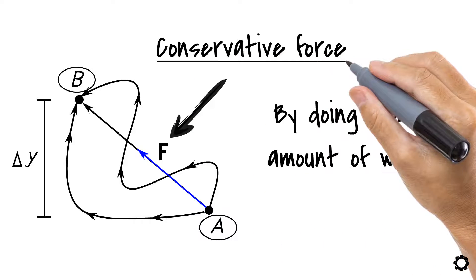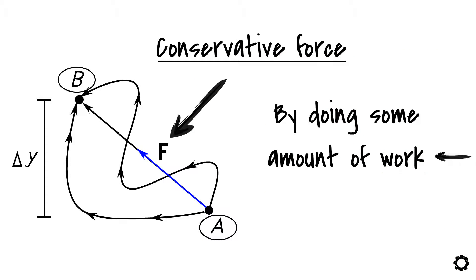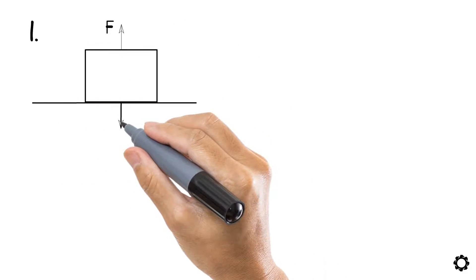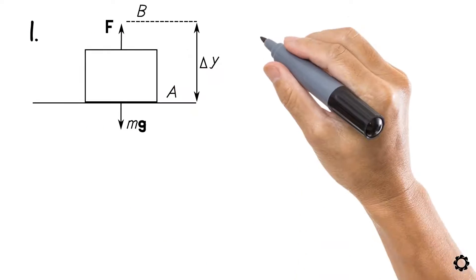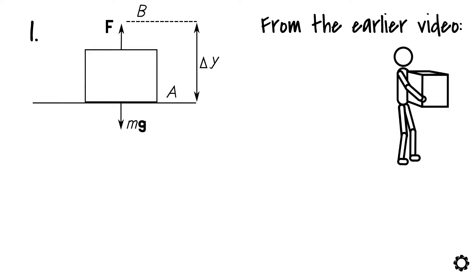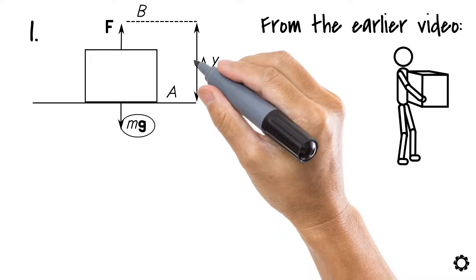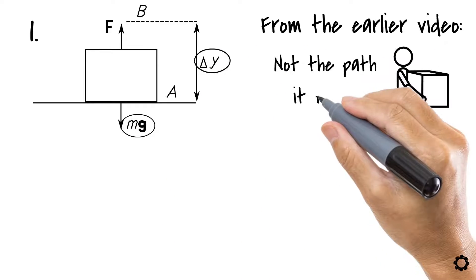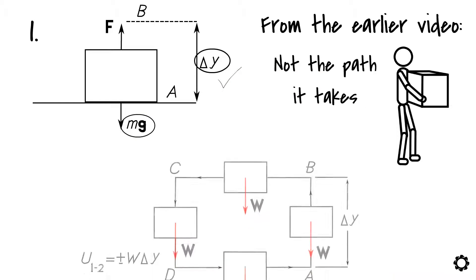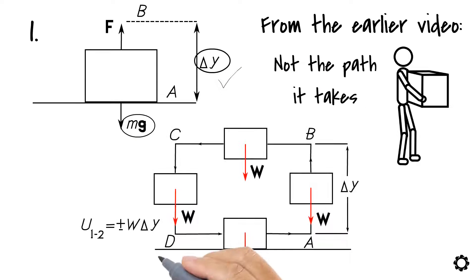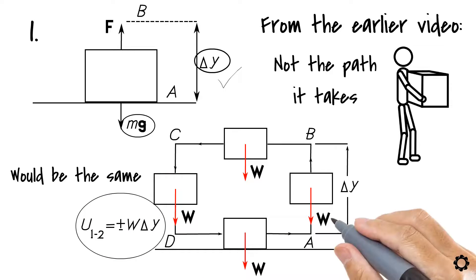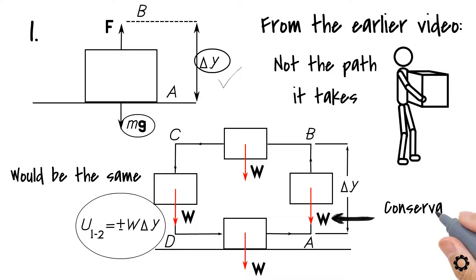Let's go through this once more by looking at the following cases. In the first case, we have a box and we would like to lift it up this way. Recall from the earlier video how the amount of necessary work to lift the box is only dependent on its weight and the vertical displacement, but not the path it takes. We could achieve the same vertical displacement by following different paths and still the amount of necessary work would be the same. Therefore, the weight of the box is a conservative force.